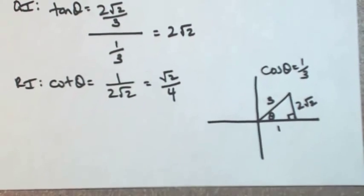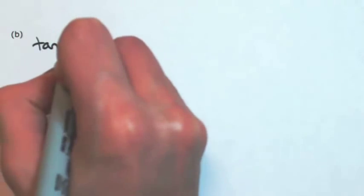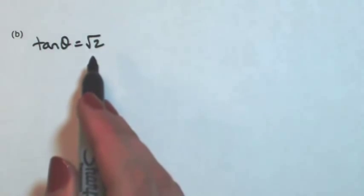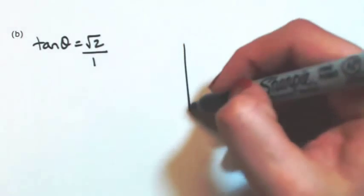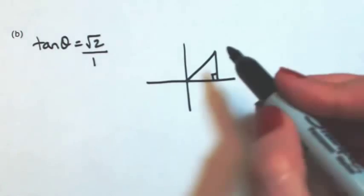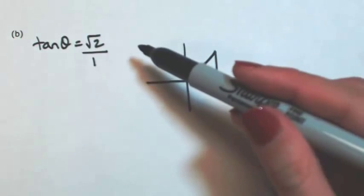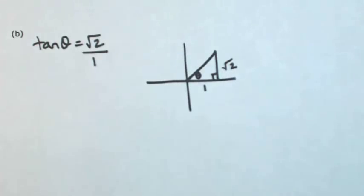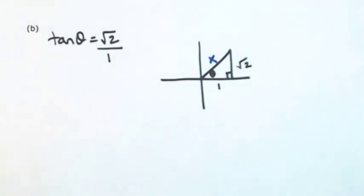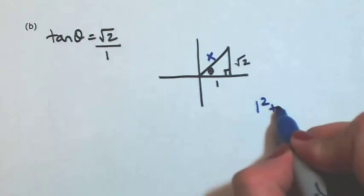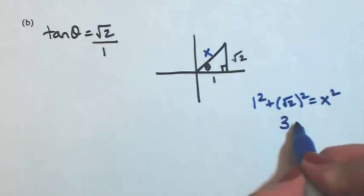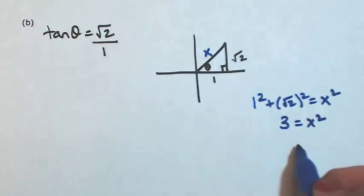So let's try one more example and do this a little easier — I'm just going to draw the right triangle. Let's say that we're given the tangent of theta is square root of two. Theta is still acute, so everything is going to be positive. Treating this as opposite over adjacent, I need to write this over one. Tangent is opposite over adjacent, so the opposite is square root of two and the adjacent is one. Using the Pythagorean theorem: one squared plus square root of two squared equals x squared, so one plus two equals three equals x squared. Because you're in the first quadrant, x is positive square root of three.